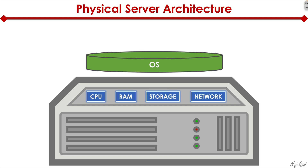What we have on top of it is the operating system. You can think of the operating system as a manager that has multiple employees that it's managing. So the CPU, RAM, storage, and network all become the employees that the operating system as a manager is managing.